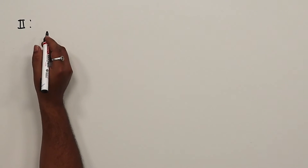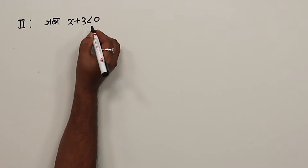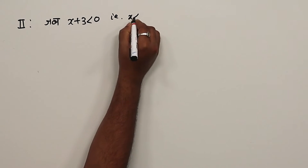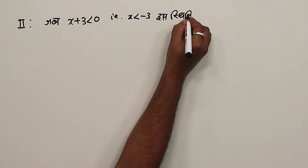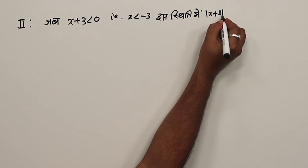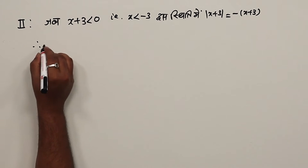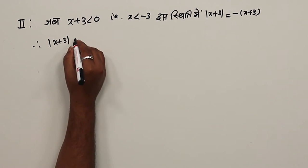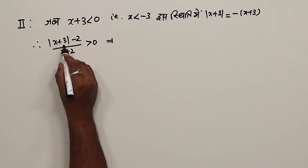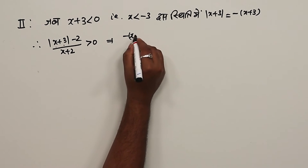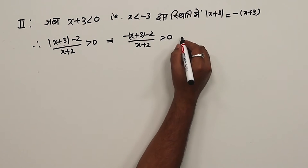Case 2: when x+3 is less than 0, meaning x is less than minus 3. In this state, mod of (x+3) becomes minus (x+3). So the expression becomes: minus of (x+3) minus 2 upon (x+2) is greater than 0.